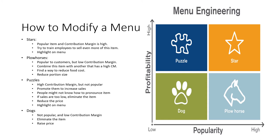For puzzles, they have a high contribution margin but they're not very popular. To make them more popular, we can promote them to increase sales, maybe on social media. We can have employees suggest them more, because people might not know how to pronounce the item — they don't want to order something they can't pronounce. If employees recommend it and say, 'I would recommend this,' then customers know how to pronounce it and are more likely to buy it. If puzzle sales are too low, we should eliminate them. We can also try to reduce the price and highlight them on the menu. Dogs are not popular and have low contribution margin — these are bad. We should eliminate the item, but we can try to raise the price if we think we can keep it on the menu.